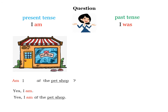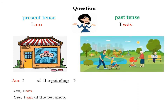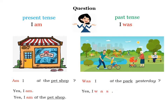Past tense: I was. I was at the park yesterday. To make a question, you move the verb to the front: Was I at the park yesterday? Yes, I was. And the sentence: Yes, I was at the park yesterday.